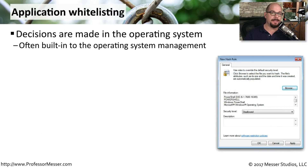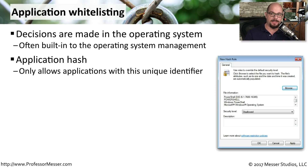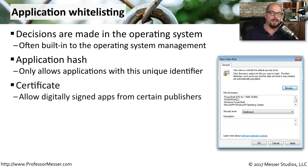If you'd really like to tighten down the security of an operating system, you can set up an application whitelist, which would only allow specifically named applications to be used on that operating system. These are often created and integrated into a centralized operating system management console so that you can manage all the devices on your network at once. There are many different ways to configure application whitelists. One way is with an application hash — a very specific and unique identifier of an application — and only the application that matches this hash would be able to execute. You might also only allow applications developed by Microsoft by permitting only a particular signed certificate.